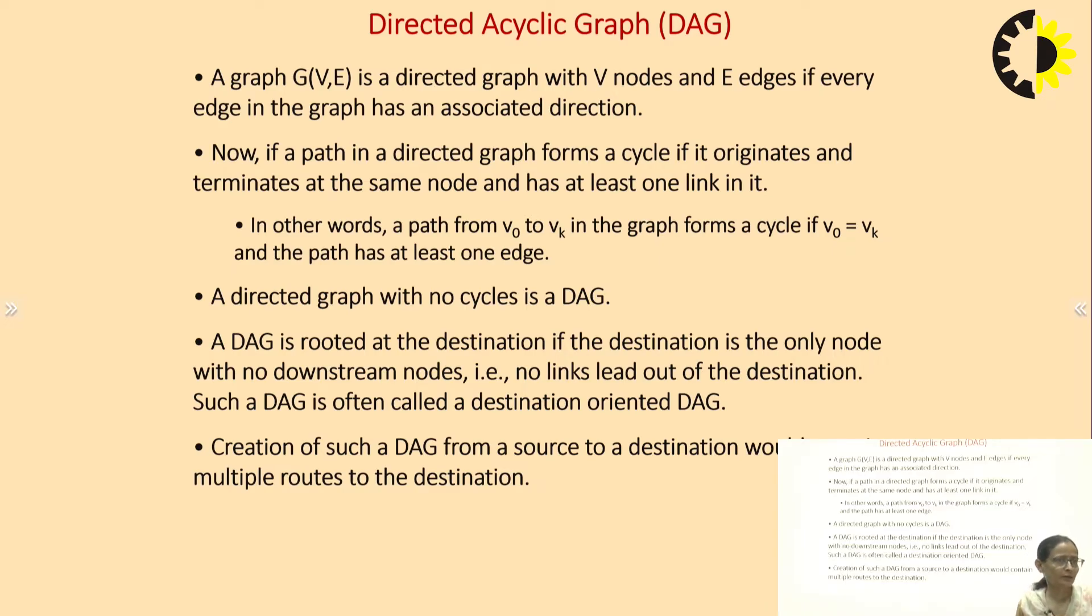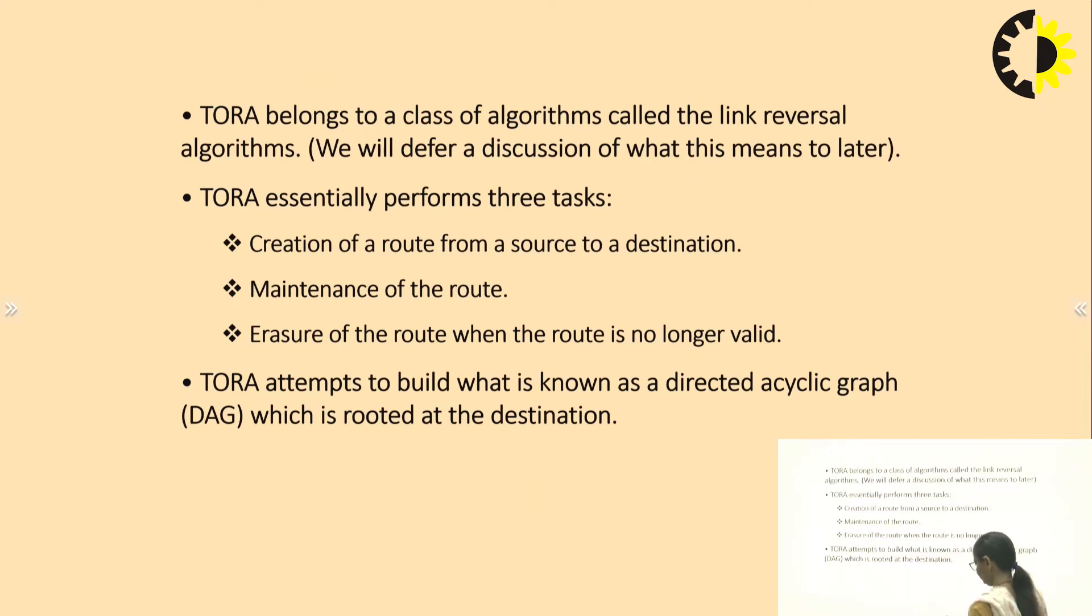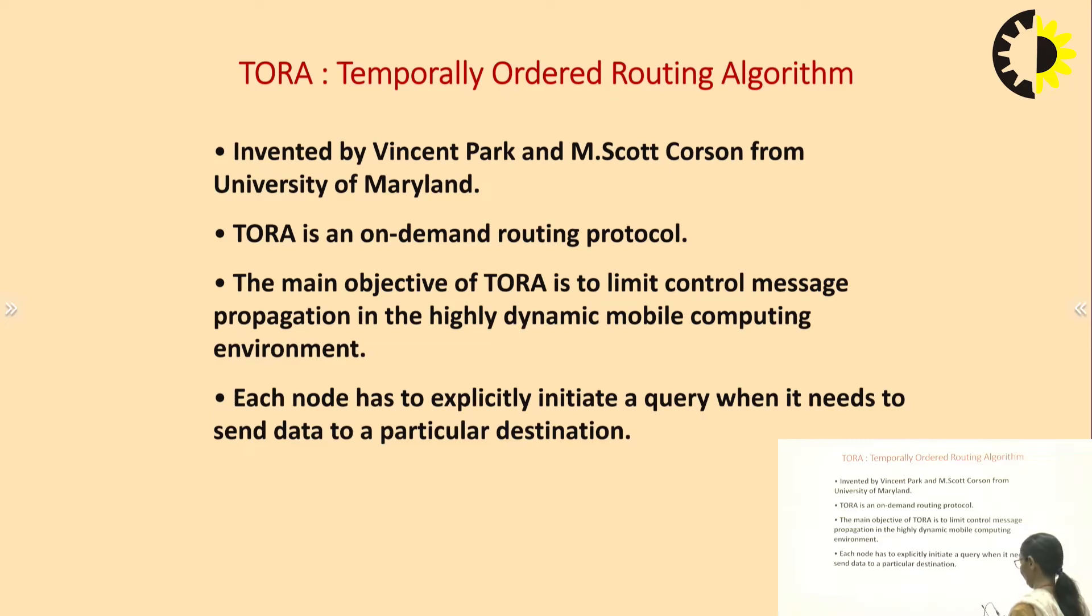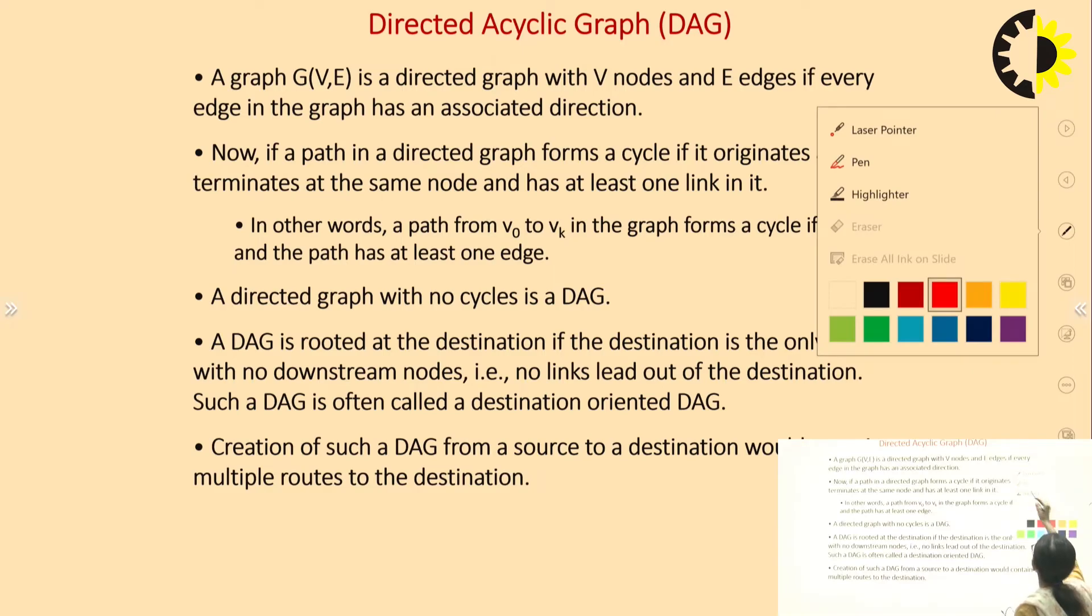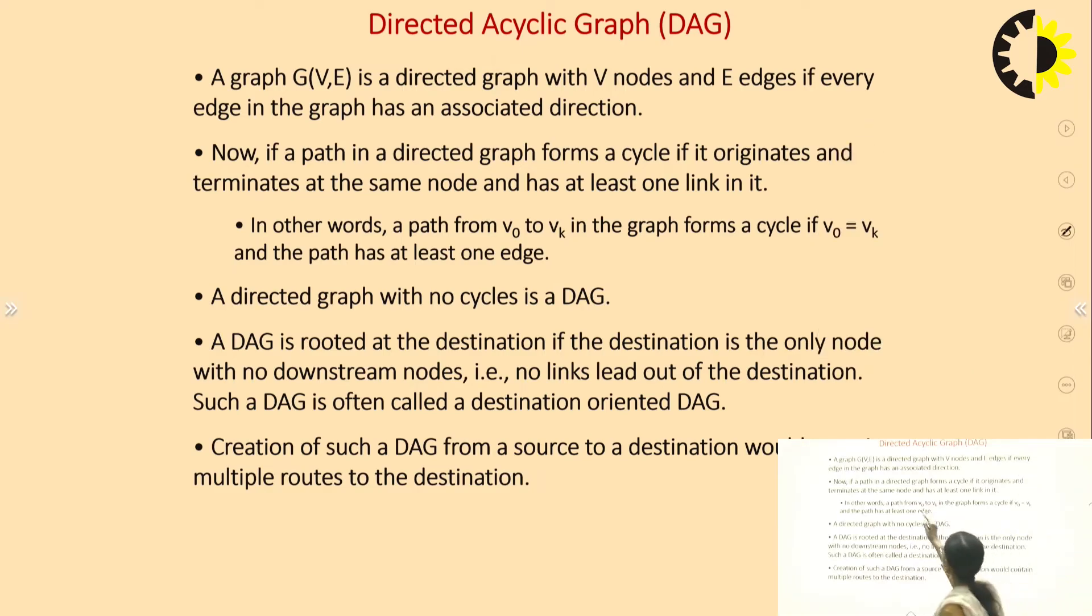Now, if a path in a directed graph forms a cycle, if it originates and terminates at the same node and has at least one link in it. In other words, a path from V0 to Vk in the graph forms a cycle if V0 equals Vk and the path has at least one edge. The directed graph which is having no cycles is a DAG.